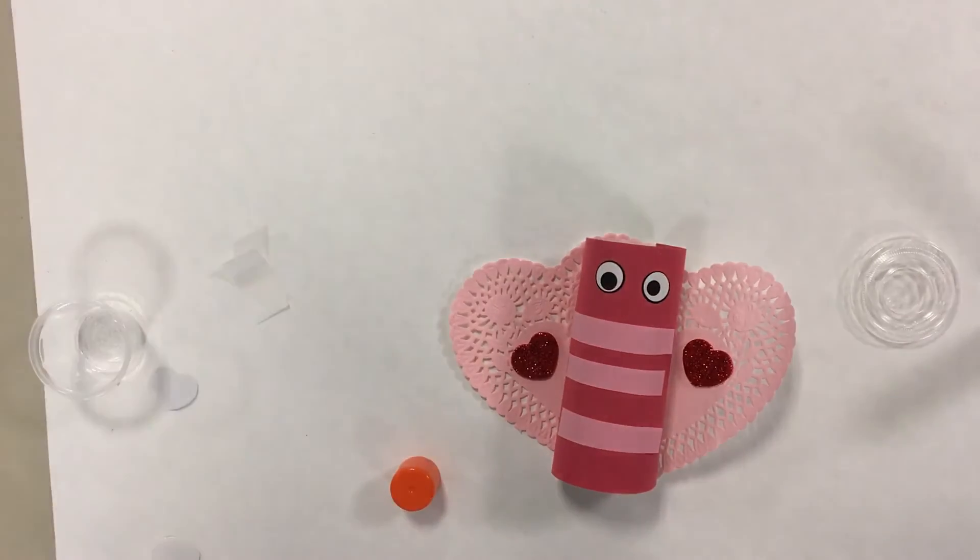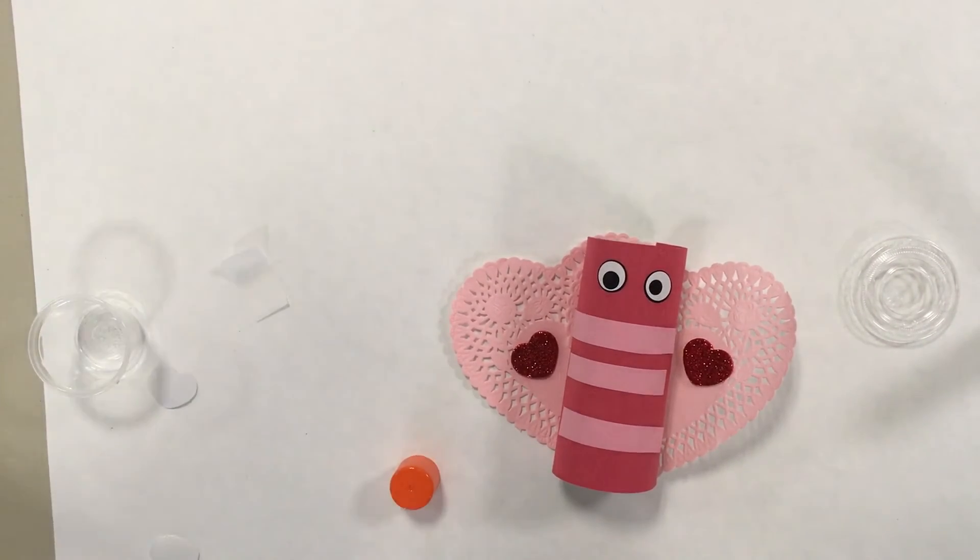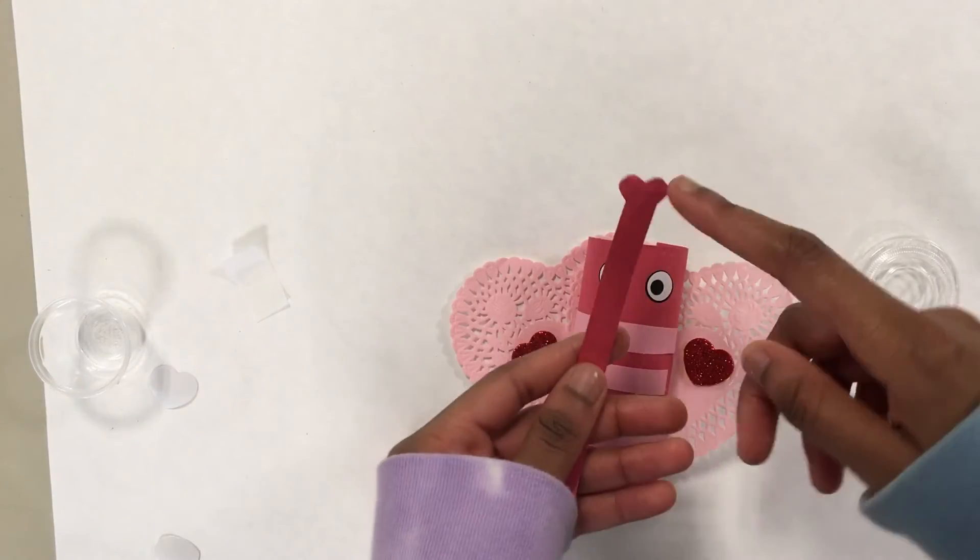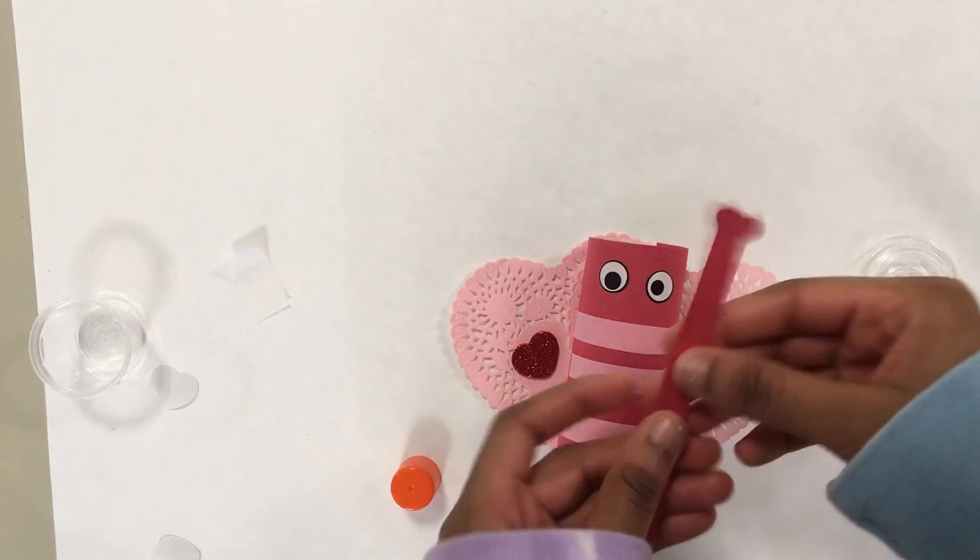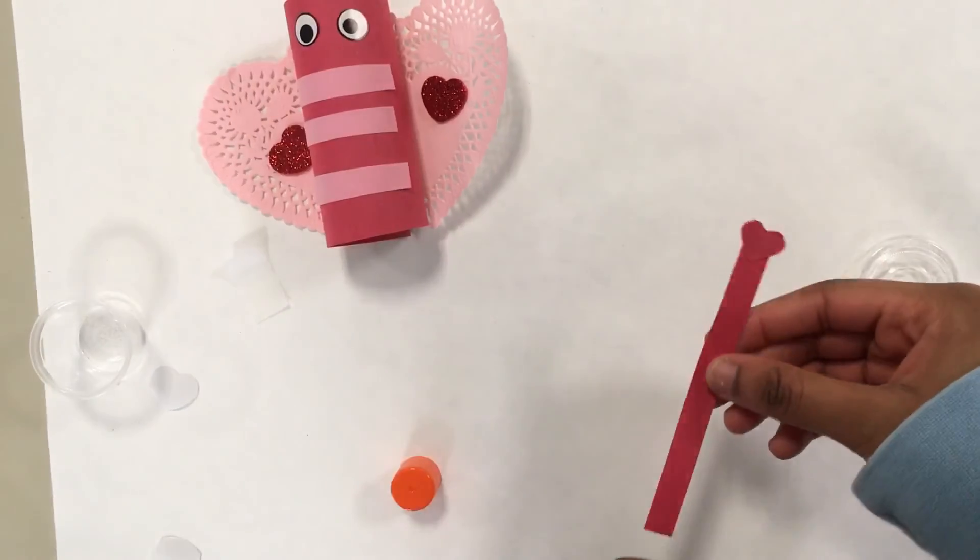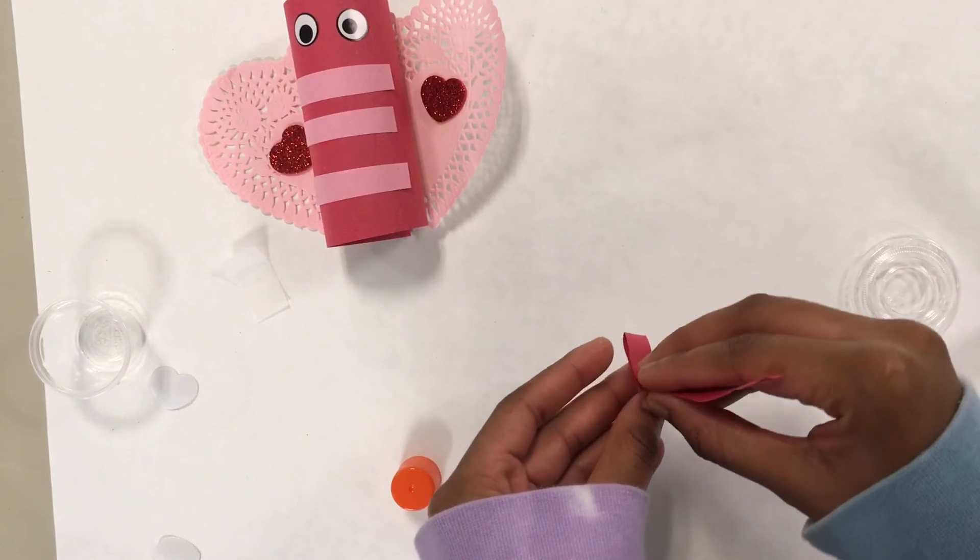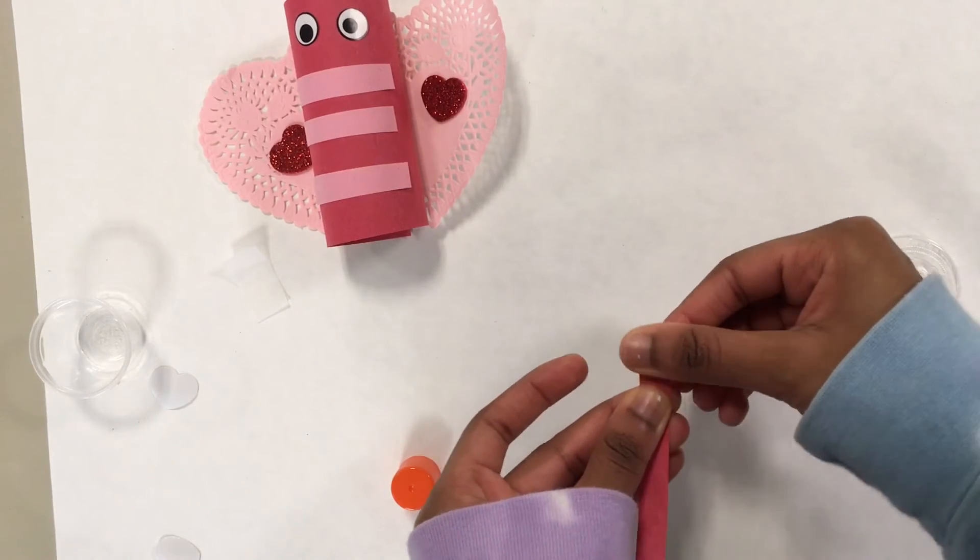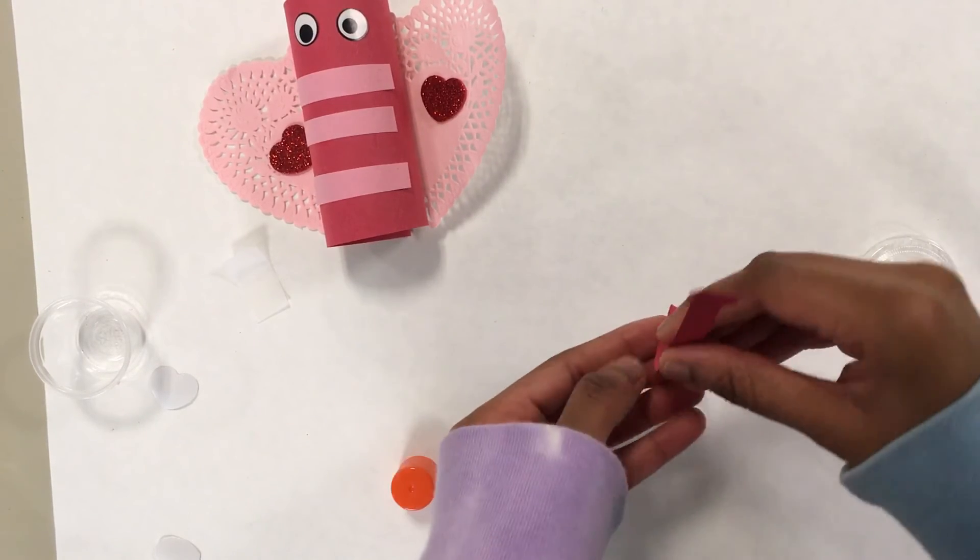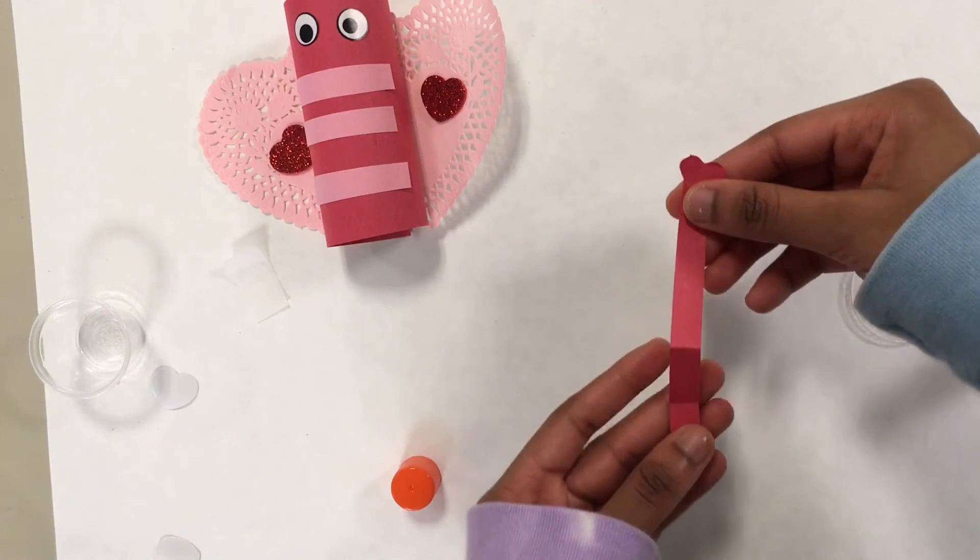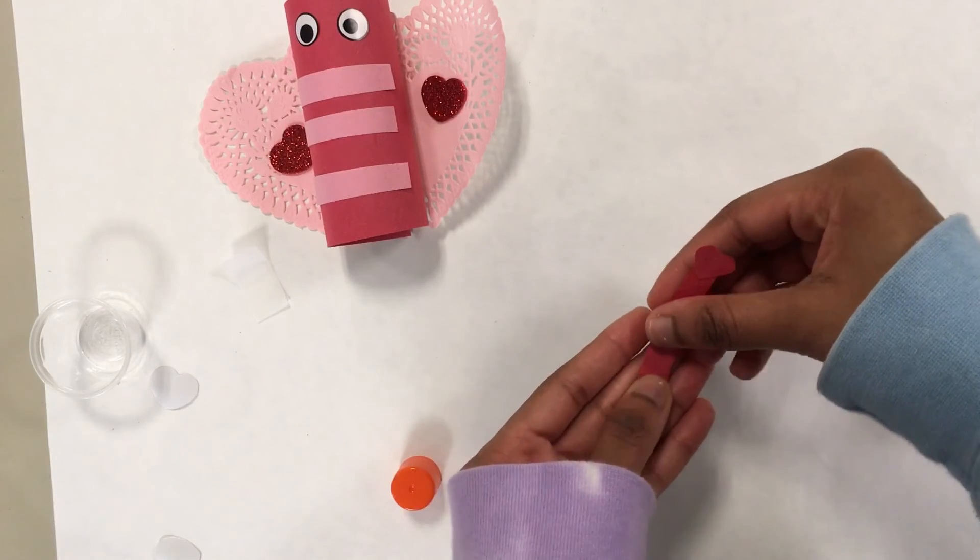Okay, now we're almost finished. So now we get our little paper with a heart on top. Now we would have to fold it, fold it like this once, and then we fold it again. See, now we fold it one more time.